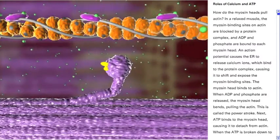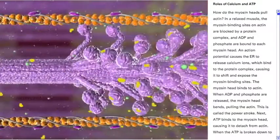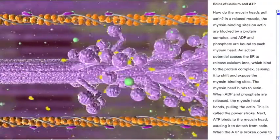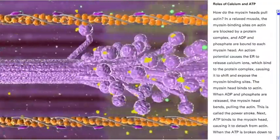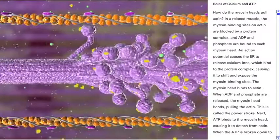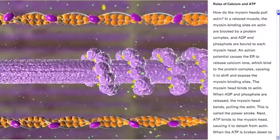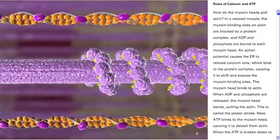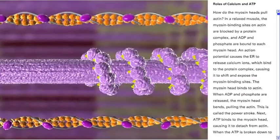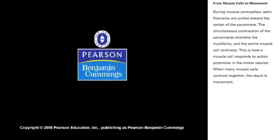The combined work of many myosin heads causes the actin filaments to slide past the myosin filaments. When the action potentials stop, calcium ions are pumped back into the ER. The myosin binding sites on actin are again blocked, and the muscle relaxes.